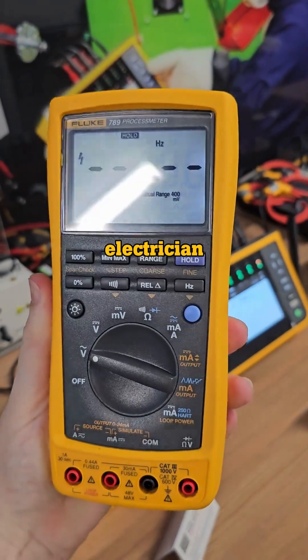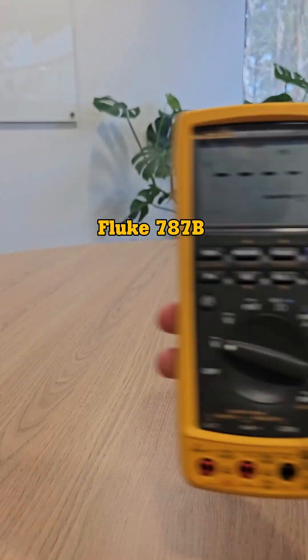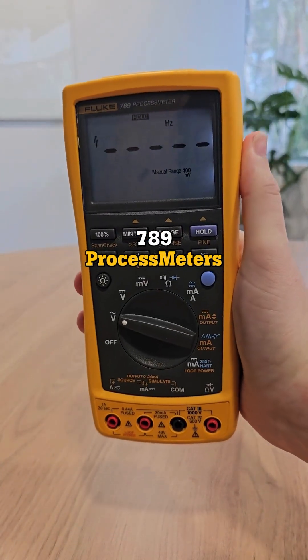If you're an instrumentation electrician, you need this tool. These are Fluke 787B and 789 process meters.